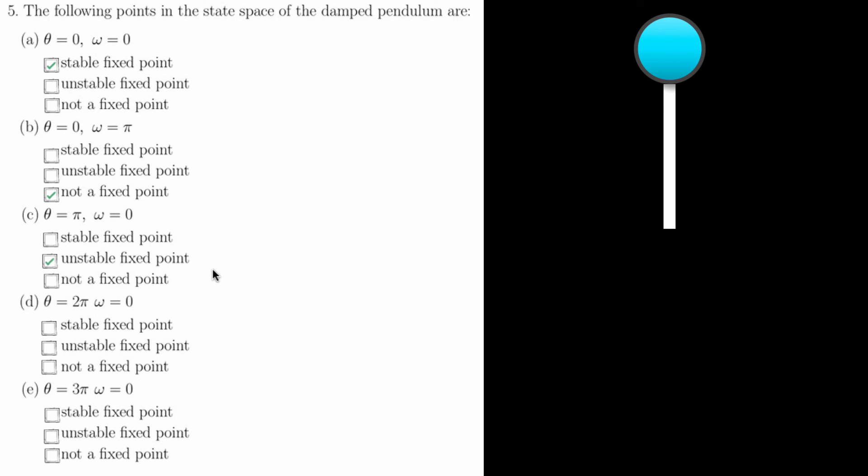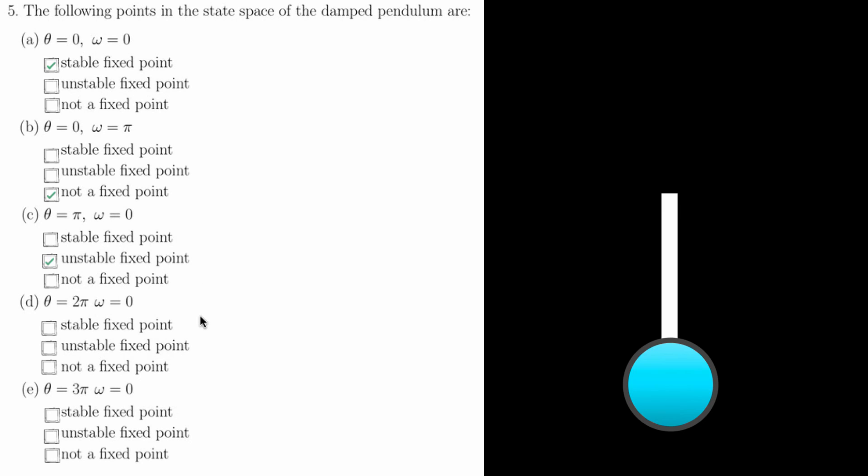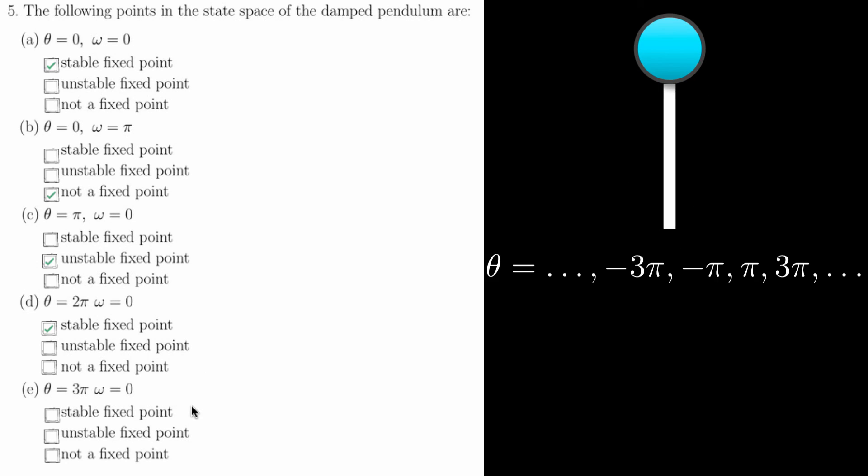For parts D and E, all we need to know is all even multiples of pi with no angular velocity are stable fixed points, and all odd multiples of pi with no angular velocity are unstable fixed points.